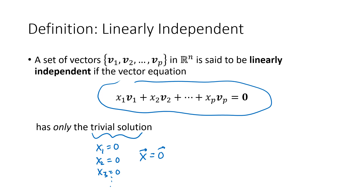But other times there are more solutions. We sometimes have free variables in this equation, which give us infinitely many solutions. When we only have the trivial solution, we say the vectors are linearly independent. But when we have non-trivial solutions — infinitely many solutions — we say the vectors are linearly dependent.